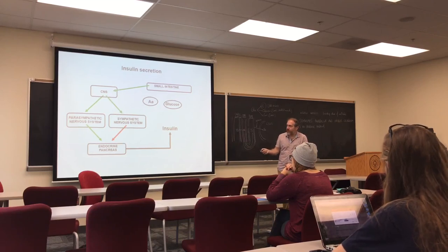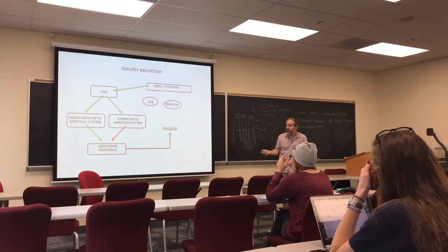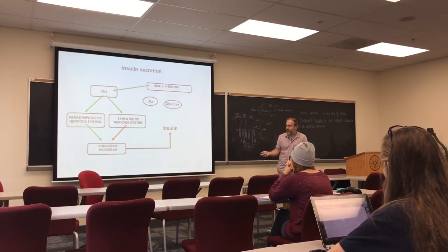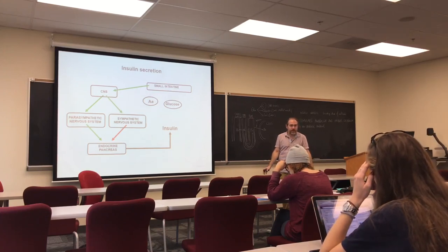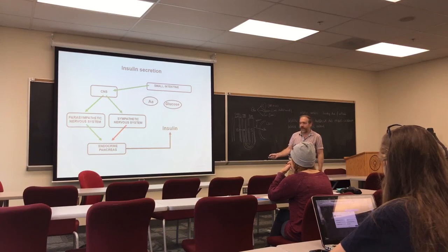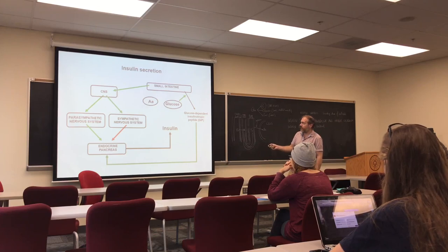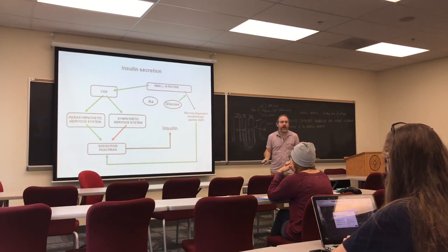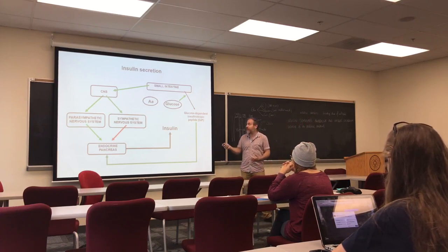The central nervous system sends messages via the parasympathetic nervous system to the endocrine pancreas to stimulate insulin secretion. If messages are sent via the sympathetic nervous system, that inhibits insulin secretion. The small intestine also secretes glucose-dependent insulinotropic peptide (GIP) in the presence of glucose, which stimulates the endocrine pancreas to produce insulin. So there are two ways to tell the endocrine pancreas to secrete insulin in response to amino acids and glucose in the small intestine and in the blood.